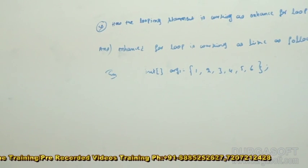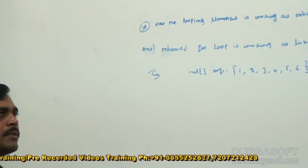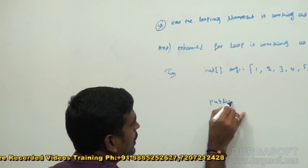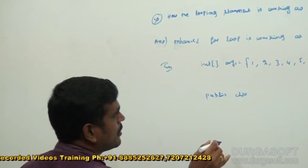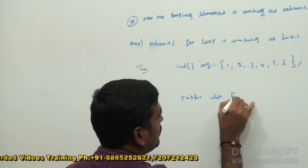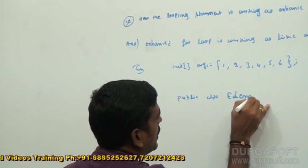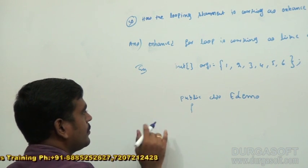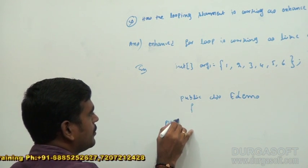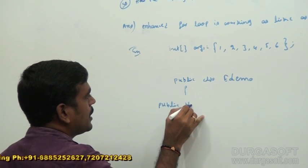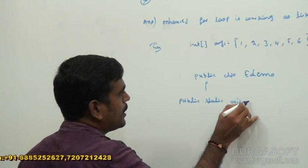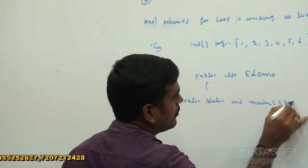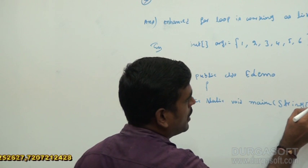how to print these values by using enhanced for loop? We can write an application like this. public class Edemo. Now here, public static